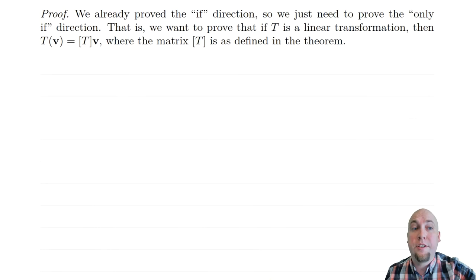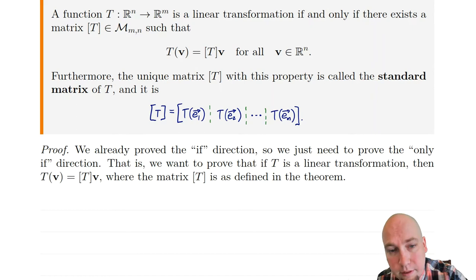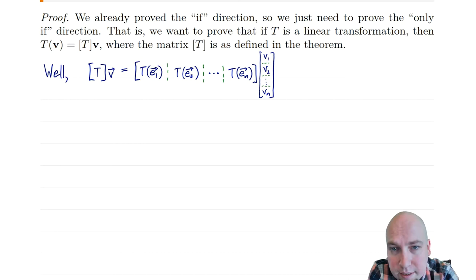We've also got to do the only-if direction. We've got to show that if T is a linear transformation, then T of V equals the standard matrix times V. So how do we do that? What we're going to do is plug in the definition of everything. We want to show that the standard matrix of T times V equals T of V. What is the standard matrix of T? I just scroll up — the standard matrix of T equals this formula, so I'm going to plop that in.